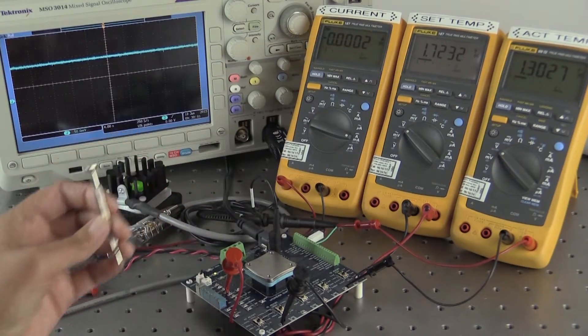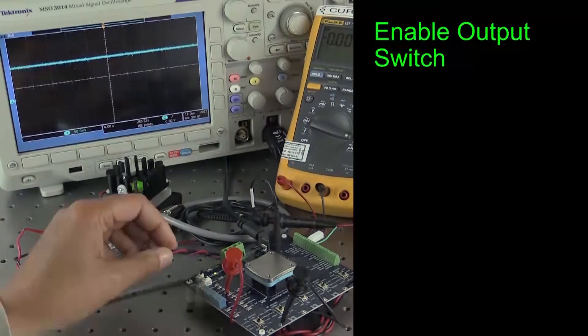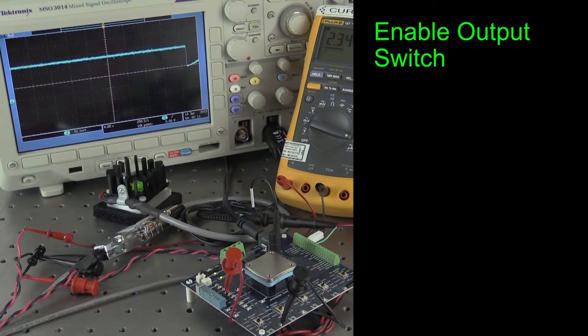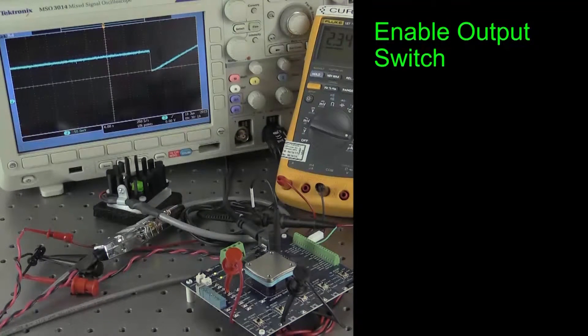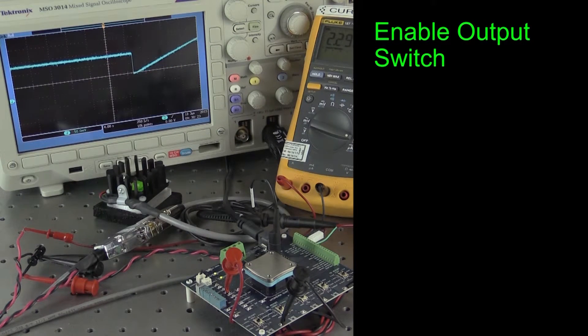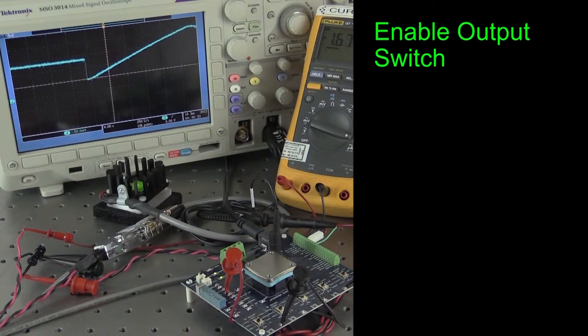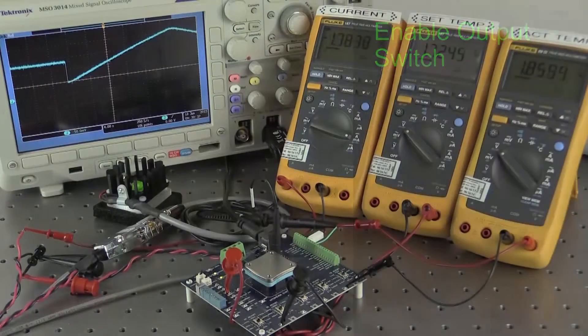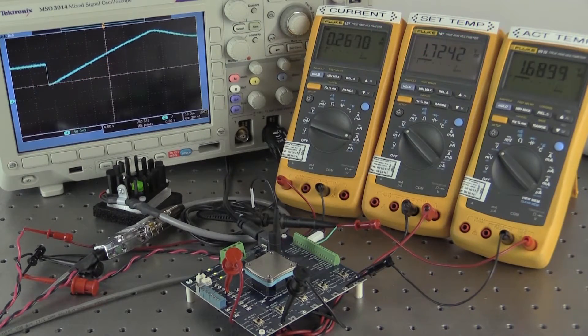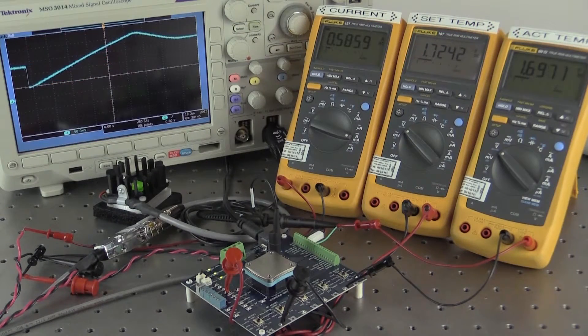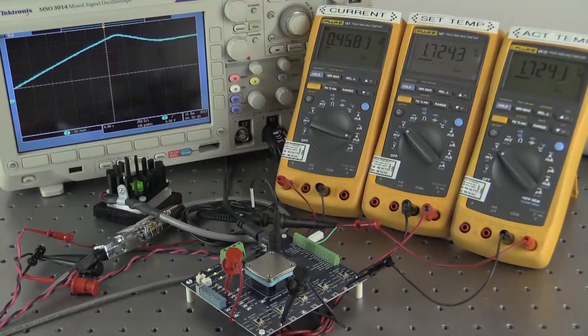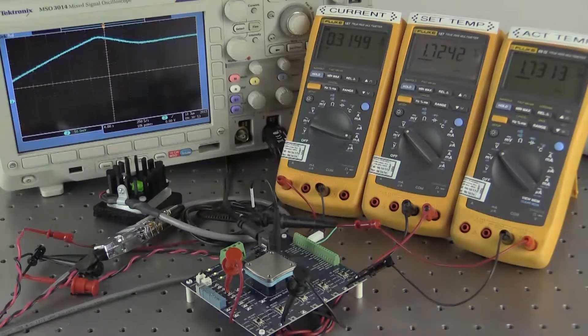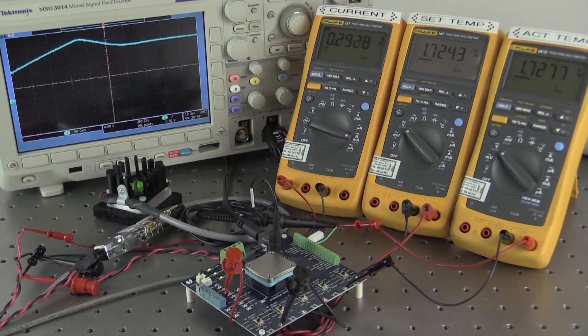To enable current through the thermoelectric, move the output switch to enable. Temp mon floats high until the enable switch is turned on. We observe the oscilloscope trace drop to the actual temperature, then rise to match the set point. Once it reaches the set point, the temperature levels off. The meters show that set point temperature and actual temperature match. The current through the ammeter initially rose to the limit current level and then stabilized at a steady state value.